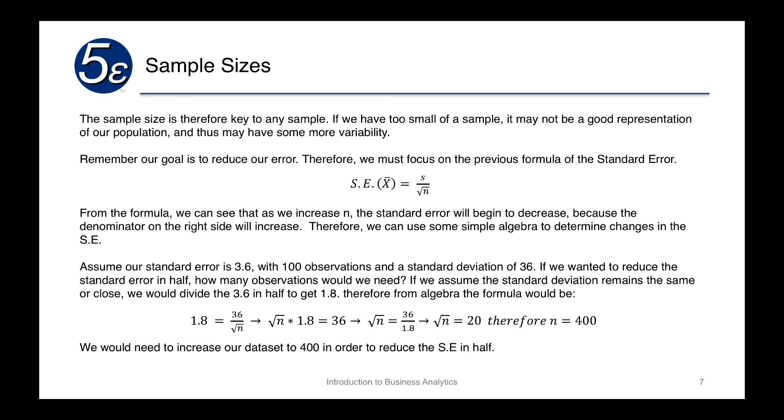And what we mean by that is, if we want to reduce the standard error, say, in half, we can use algebra to determine what is the sample size or the approximate sample size we would need to actually get a standard error instead of, say, 3.6 to 1.8. And we can see from here below that if we assume the standard deviation remains the same, or close, we could divide the 3.6 in half to get 1.8, which now 1.8 equals 36 over the square root of N. Then, by using algebra, we can find that the square root of N ends up being 20, and therefore, N is 400. So, if our original estimate was a standard error of 3.6 with 100 observations, in order to cut that standard error in half to 1.8, we would need to increase the sample fourfold to 400.